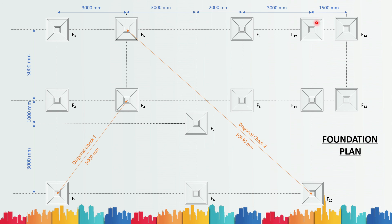Once you have plotted all the footings on site, measuring this diagonal distance gives you improved accuracy. If the distance is not equal to 10,630mm, you can infer that somewhere the setting out of the foundation has gone wrong and you can quickly redo it. This step is very important because the foundation is the first thing constructed and set out on site. If this goes wrong, the entire building will go wrong. So these checks are extremely important to be done at the very first step.